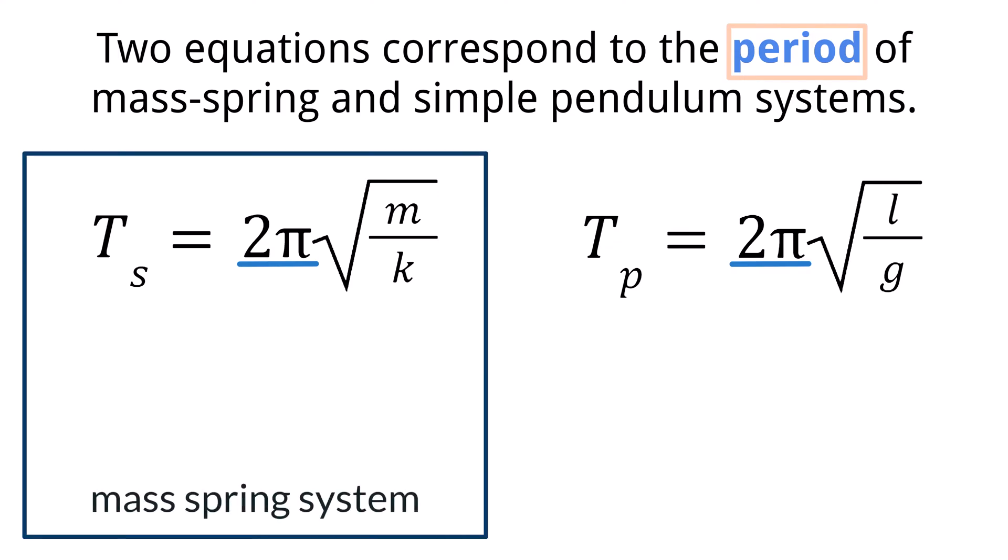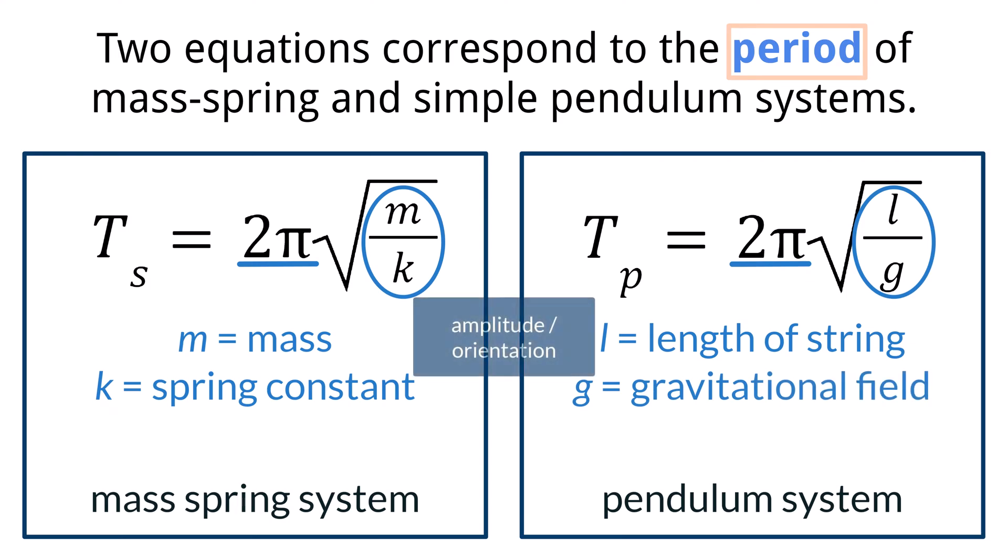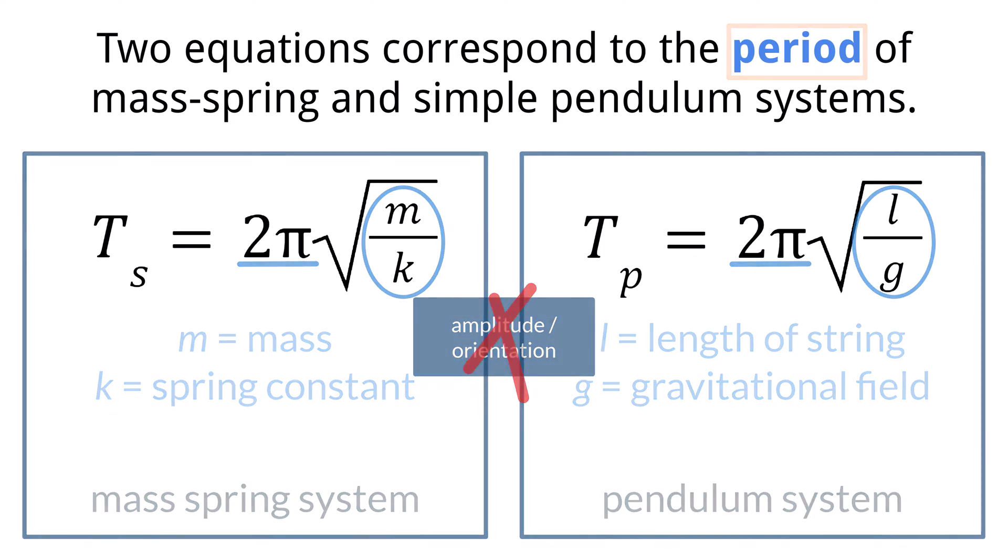For a mass spring system, the mass of the object m and the spring constant k are the only factors about the system that determine the period. Likewise for the pendulum, the only things that determine the period of a pendulum are the length of the string l and the gravitational field the system is in, g. The amplitude of either system or the orientation of the mass spring system in either a vertical or horizontal manner do not affect the period.